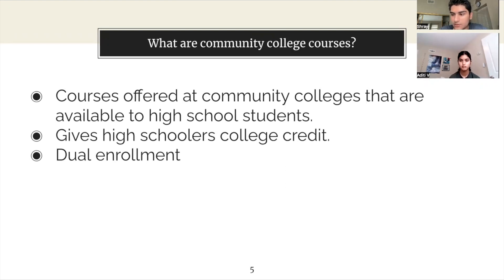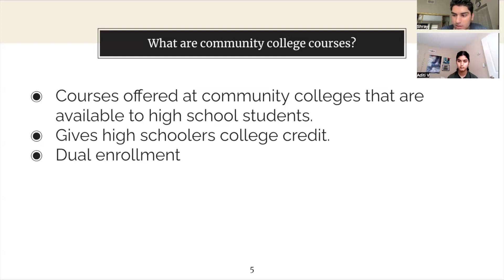High school students will need to attend classes on the community college campus or online. There's also a system known as dual enrollment, also known as concurrent enrollment. This enables the high school student to take college courses taught by college professors at their own high school campus. Depending on your school's policy, these courses can also count towards your high school diploma.